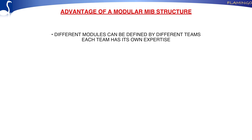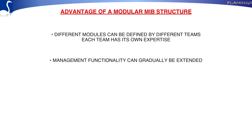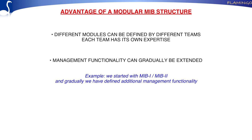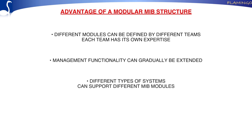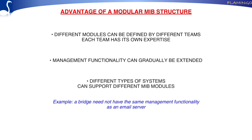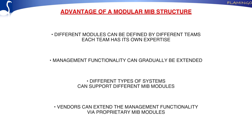The second advantage is that you can gradually extend management functionality — we started with MIB 1, then MIB 2, and added modules over time. The third advantage is that some modules only make sense within specific systems: a bridge doesn't need a module for managing an email server, and an email server doesn't need a module for bridge behavior. Finally, vendors can extend standard MIB variables with their own proprietary variables by simply adding another module.